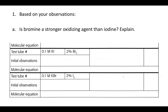Reduction happens when you gain electrons, and when you gain electrons you're taking them from something else. So whatever gains the electrons is reduced, and it's making something else oxidized because it's taking electrons away from them, making the charge on that other element more positive. So it's acting as an oxidizing agent.